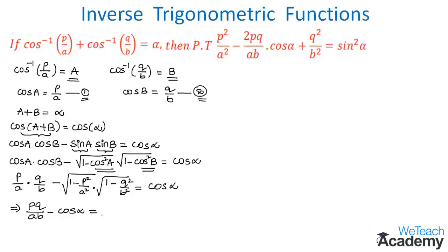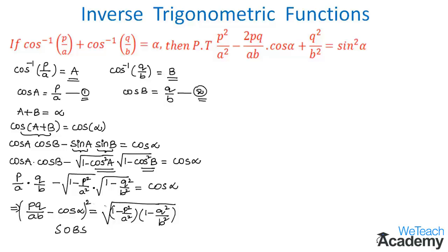The two terms under the roots can be combined under a single radical: PQ/AB − cos α = √[(1 − P²/A²)(1 − Q²/B²)]. The next step is squaring both sides: (PQ/AB − cos α)² = (1 − P²/A²)(1 − Q²/B²), where the square and square root on the right cancel.